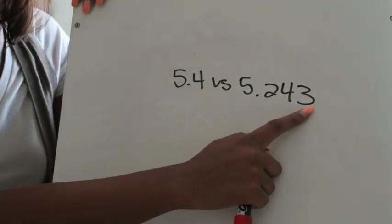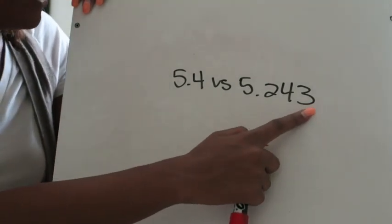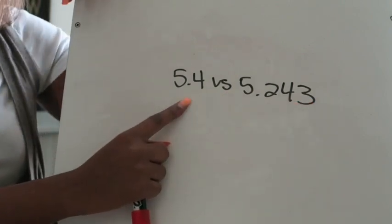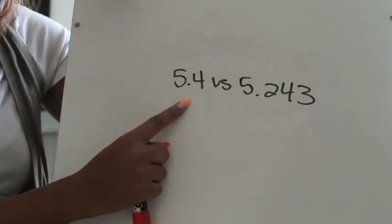but then they'll say to themselves oh this goes up to the thousandths place so this number or this decimal must be greater than this one because I heard the word thousand in that decimal.